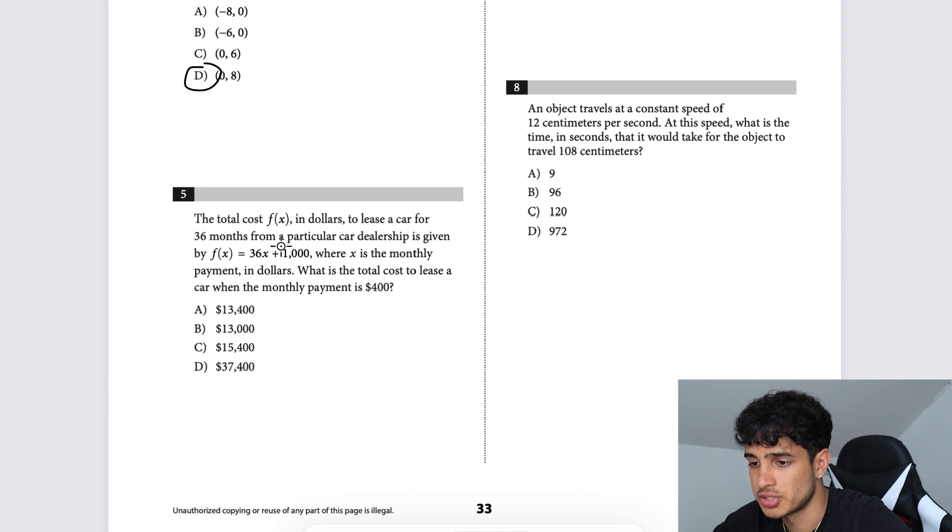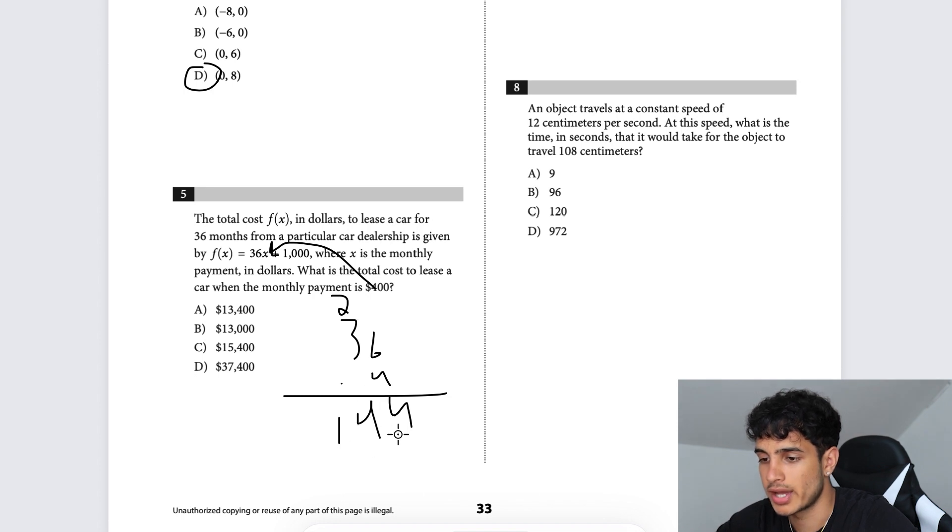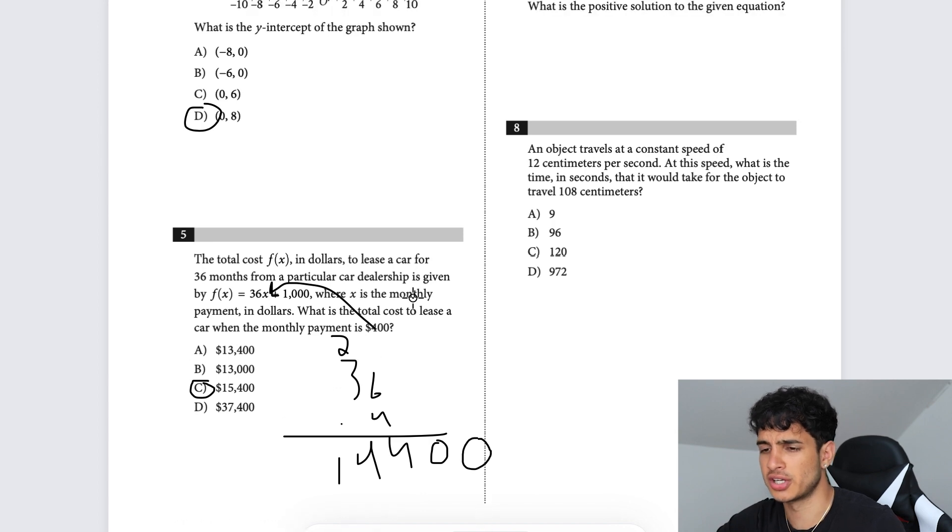The total cost F(X) in dollars to lease a car for 36 months is given by F(X) equals 36X plus 1000, where X is the monthly payment in dollars. What is the total cost to lease a car with a monthly payment of $400? All you have to do is plug in 400 into X. What's 400 times 36? 36 times 4 equals 144, then add two zeros to get 14,400. Then add 1000, so you're left with $15,400.